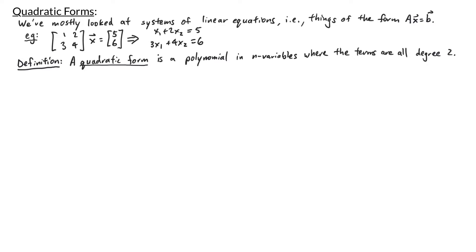On the other hand, a quadratic form is a polynomial in n variables where the terms are all degree 2. Let's look at some examples of quadratic forms. Let q1 be the polynomial x1 squared. This is a quadratic form in one variable, and x1 is squared, so it's degree 2.